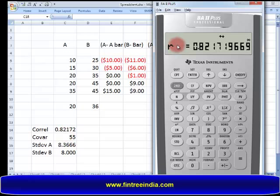What is the meaning of this 0.82? It does not mean that when A increases by 10, B will increase by 8.2. No. What it means is when A increases, there's an 82% chance that B will increase. We do not have the quantum of that relationship, we just have the strength of the relationship.